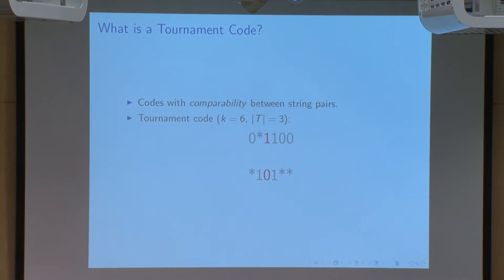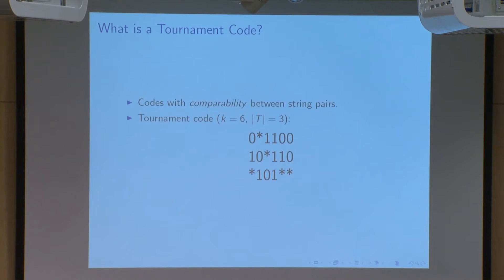I can repeat this procedure with the second and the third string to determine that the third string is also greater than the second string. One thing you might notice about this specific tournament code is that the comparability property is not transitive. What that means is that even though the first string is less than the second string and the second string is less than the third string, it doesn't mean that the first is less than the third string.